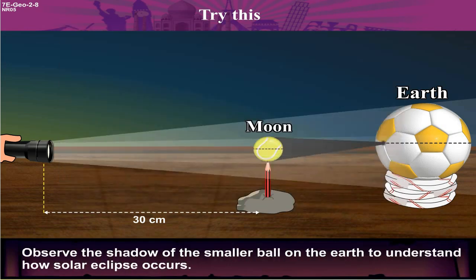Observe the shadow of the smaller ball on the earth to understand how solar eclipse occurs.